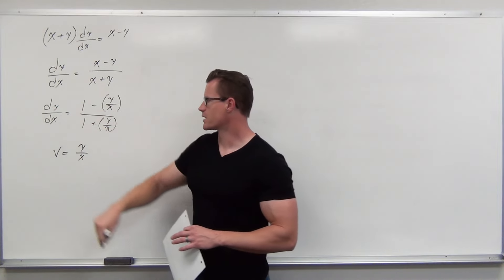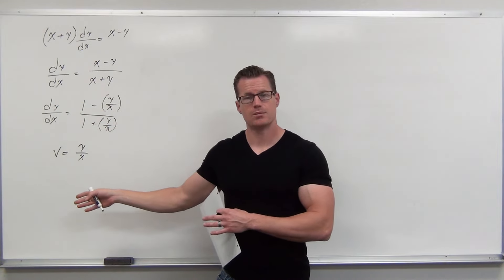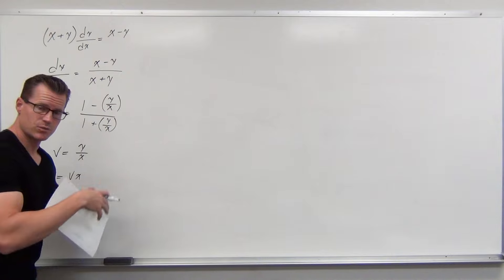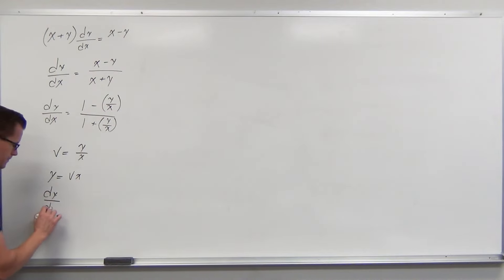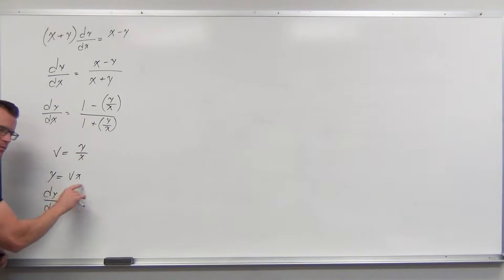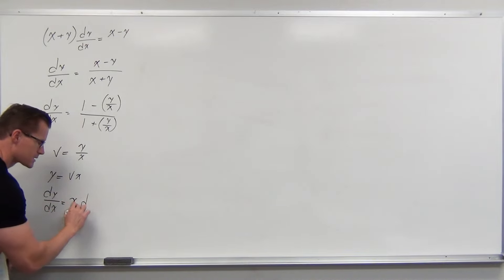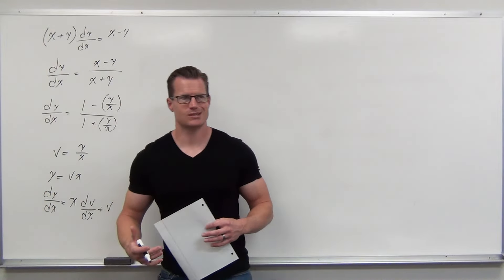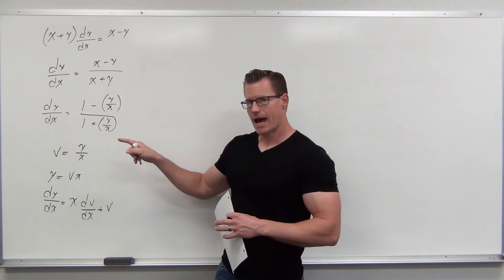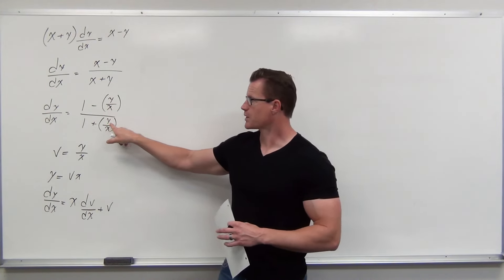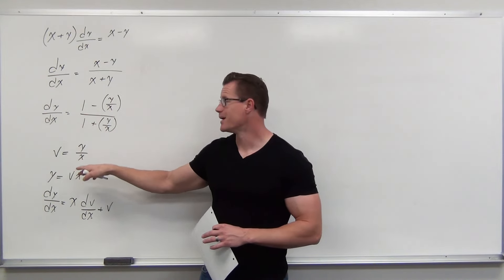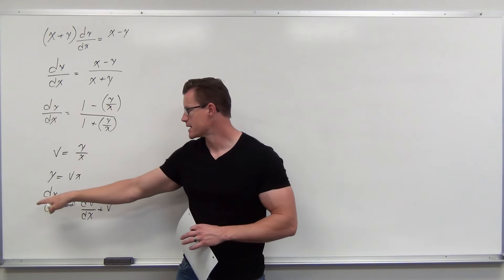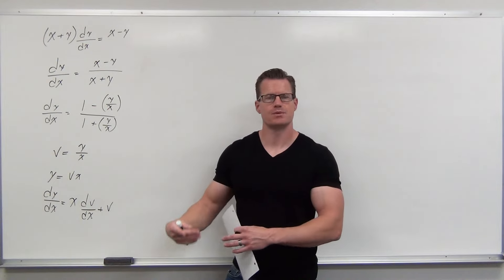This little y also has to go. That's where the substitution comes in handy. If we let v = y/x and solve for y, then take an implicit derivative by the product rule, we get dy/dx = x(dv/dx) + v. Now we do a two-part substitution: we replace each y/x with v, and we replace dy/dx with x(dv/dx) + v. These are the same dy/dx, so on the left-hand side we get x(dv/dx) + v, and on the right-hand side 1 minus v over 1 plus v.